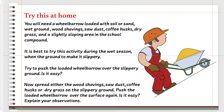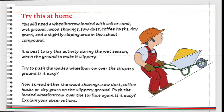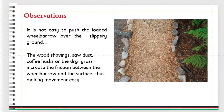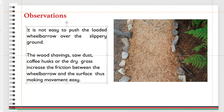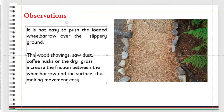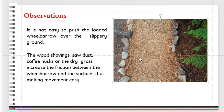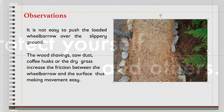You will observe that it is not easy to push the loaded wheelbarrow over the slippery ground. The wood shavings, sawdust, coffee husks, or dry grass increase the friction between the wheelbarrow and the surface, thus making movement easy.